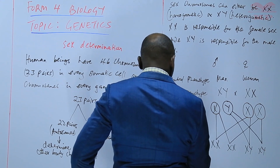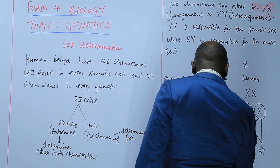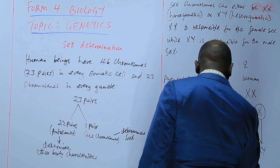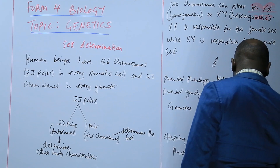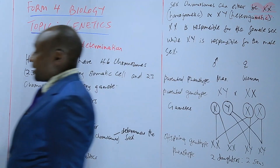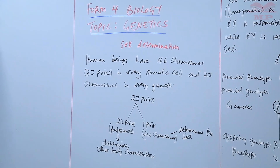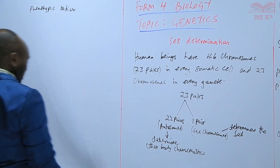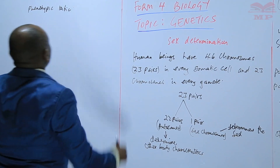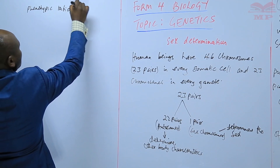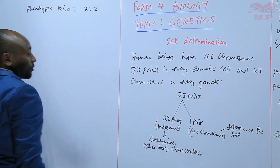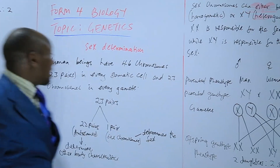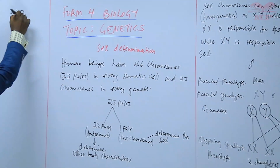The offspring phenotype: the first two — XX, XX — are daughters, so we have two daughters. The last two — XY, XY — are sons, so we have two sons. The phenotypic ratio is two to two, which simplifies to one is to one.